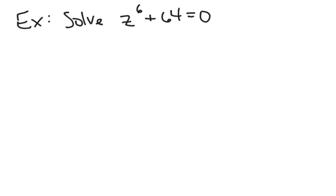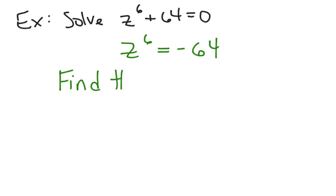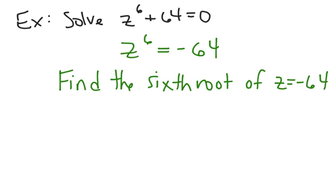To solve an equation like z^6 + 64 = 0 using the nth root formula, you solve it like any algebra equation. Once you get to z^6 = −64, what you're actually doing is finding the sixth root of z = −64, which we just did. The first step is always to isolate the term with z. Don't treat this like a regular algebra problem — you're finding the complex nth roots. And that's the end of Section 8.3.